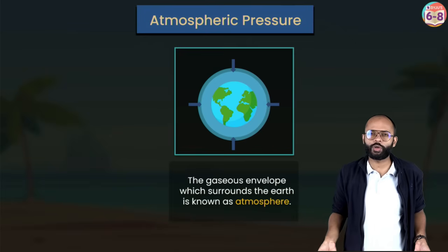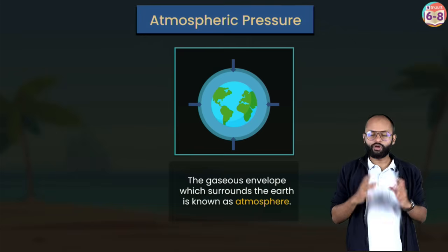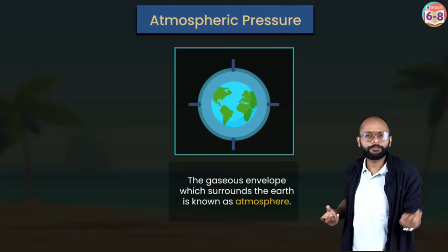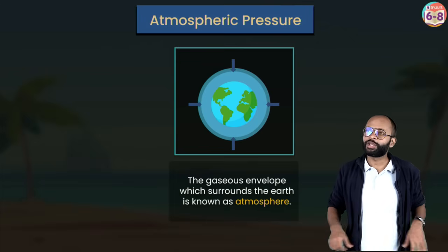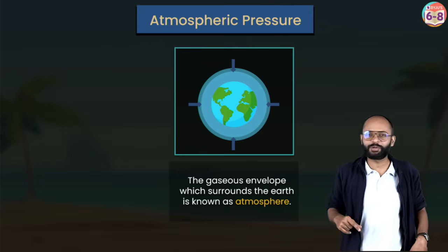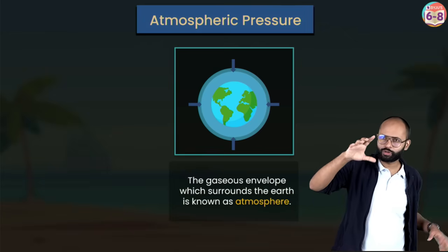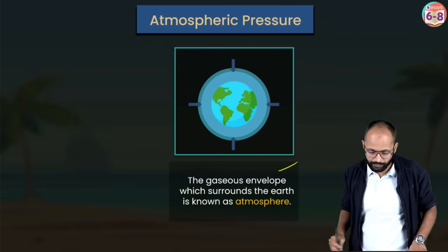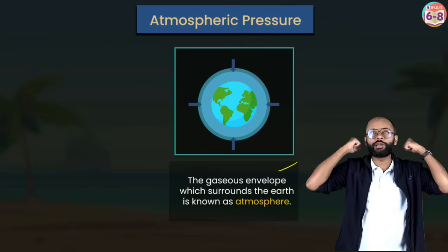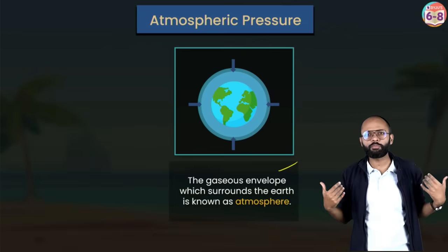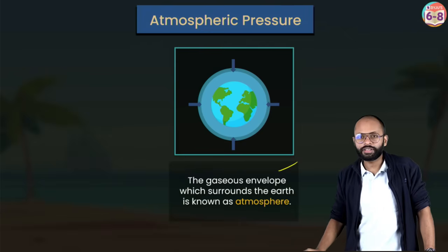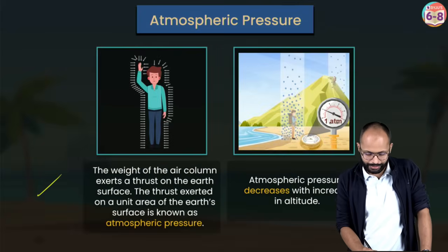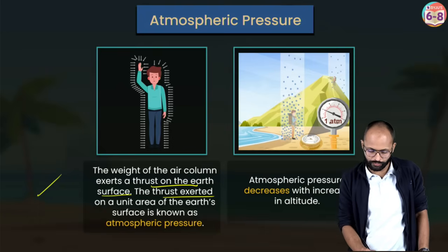Atmospheric pressure: gases are also fluids. The gaseous envelope surrounding the earth is known as the atmosphere. You don't feel atmospheric pressure because your body has adapted to it, but you have the pressure of about three to four elephants on you. The weight of the air column above us exerts thrust on the earth's surface; thrust per unit area of earth's surface is called atmospheric pressure.